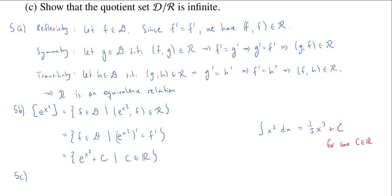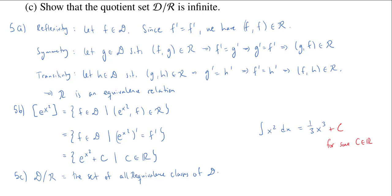What about 5c? It asks you to show that the quotient set is infinite. The quotient set D mod R equals the set of all equivalence classes — the R-equivalence classes of D. In 5b we wrote down a single equivalence class, which is a single element of the quotient set. What we'd like to do is show there are actually infinitely many of these equivalence classes. One way is by showing there are infinitely many functions that are not equivalent to each other.